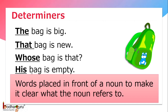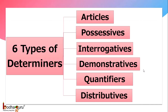So remember, determiners will always be placed in front of a noun. There are 6 types of determiners: articles, possessives, interrogatives, demonstratives, quantifiers, and distributives.